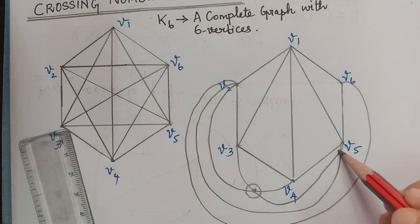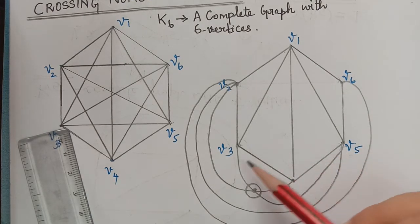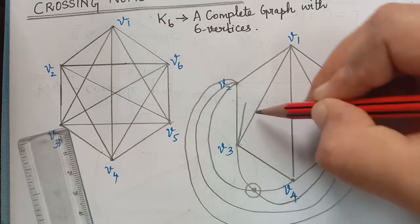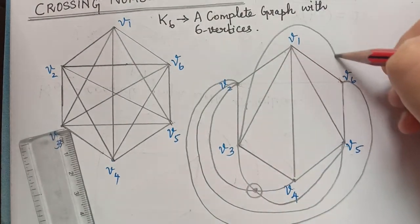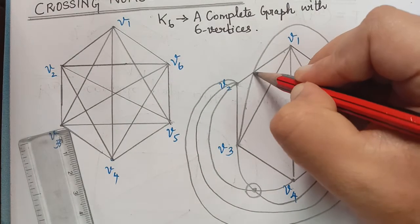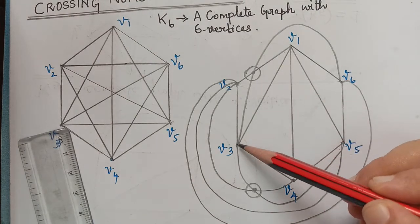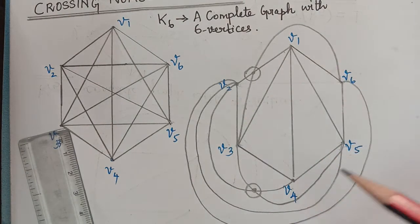Now after that, from V3 to V6 we can draw it in this way, that is V3 to V6, so that there will be one crossing here. Now we have edges between V3 and all the other vertices.